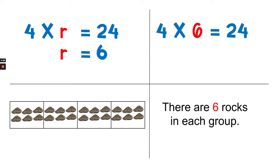We can say that 4 times the unknown equals 24. And if the unknown, or R, equals 6, we can rewrite the equation to be 4 times 6 equals 24. There are 6 rocks in each group.